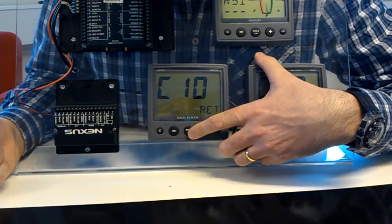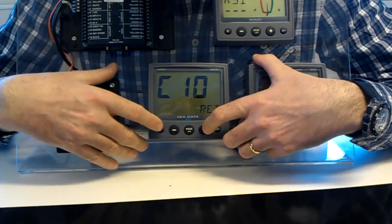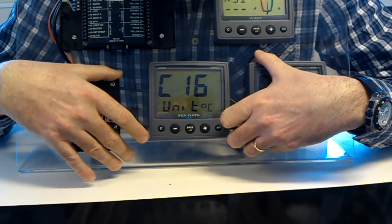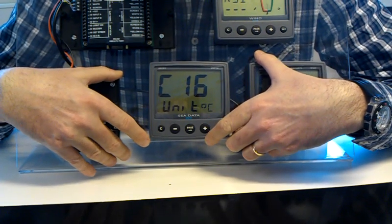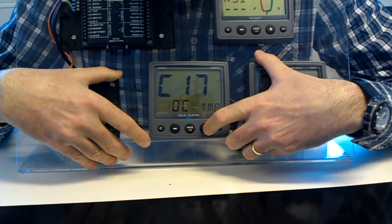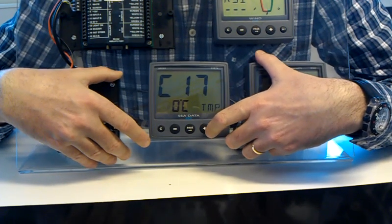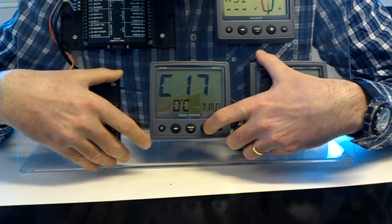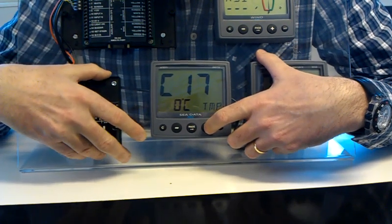Moving on, C16 is the temperature units, we can choose between centigrade or Fahrenheit. C17 is the temperature calibration, again if we notice the temperature is off.